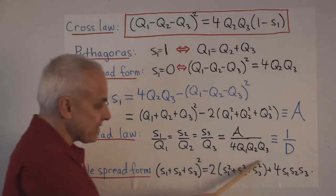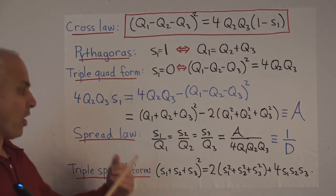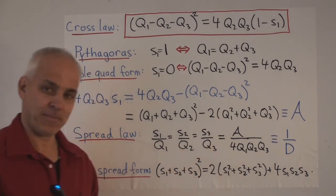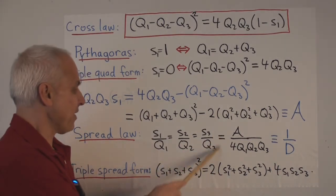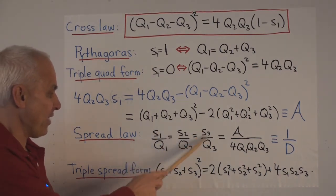Now since this is a symmetrical expression in Q1, Q2, Q3, it's also got to be equal to S2 over Q2, and S3 over Q3. And that proves the spread law, this relationship between the spread and the quadrances.